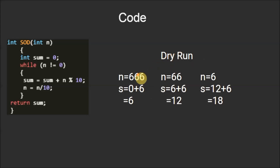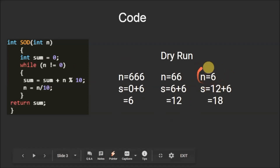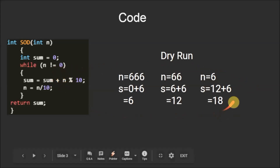Let's do a dry run with n equals 666. Since n is not equal to 0, we enter the while loop. The value of s becomes 0 plus 6, which equals 6, then n is updated to 66. Since n is still not equal to 0, s becomes 6 plus 6, which equals 12, and n is updated to 6. Since n is still not zero, s becomes 12 plus 6, which is 18. Then n becomes 0, so we exit the loop and 18 is returned by the `sod` function.